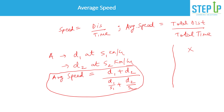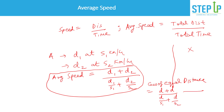A special case: if the distances are equal (d1 = d2 = d), the formula simplifies. Total distance is 2d, and total time is d/s1 + d/s2. Simplifying gives average speed = 2·s1·s2 / (s1 + s2). This is the harmonic mean formula, useful when equal distances are covered at two different speeds.